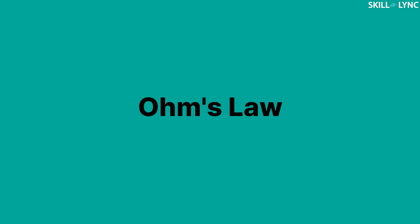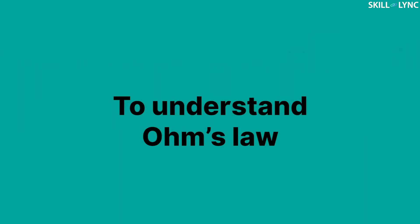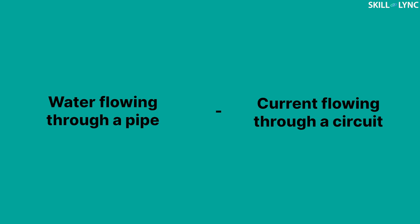Let us first discuss Ohm's law. Ohm's law was discovered in 1827. It gives a relation between voltage, current, and resistance. To understand Ohm's law, we will take the analogy between water flowing through a pipe and current flowing through a circuit.